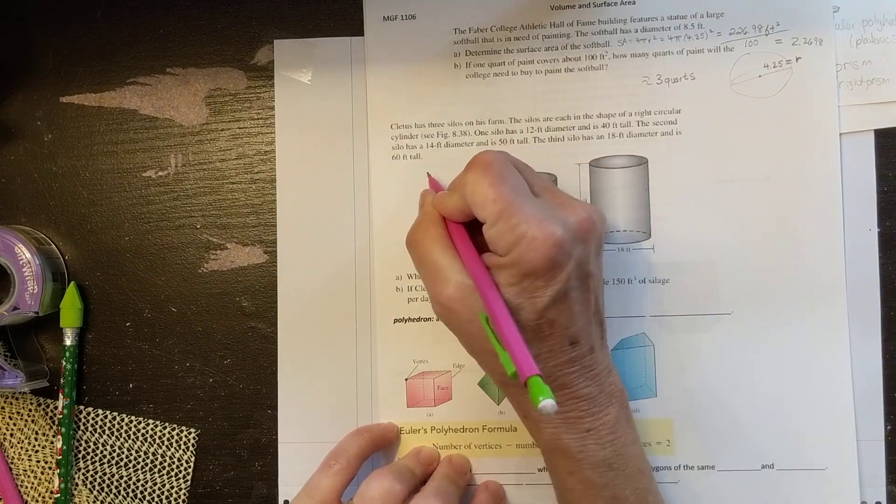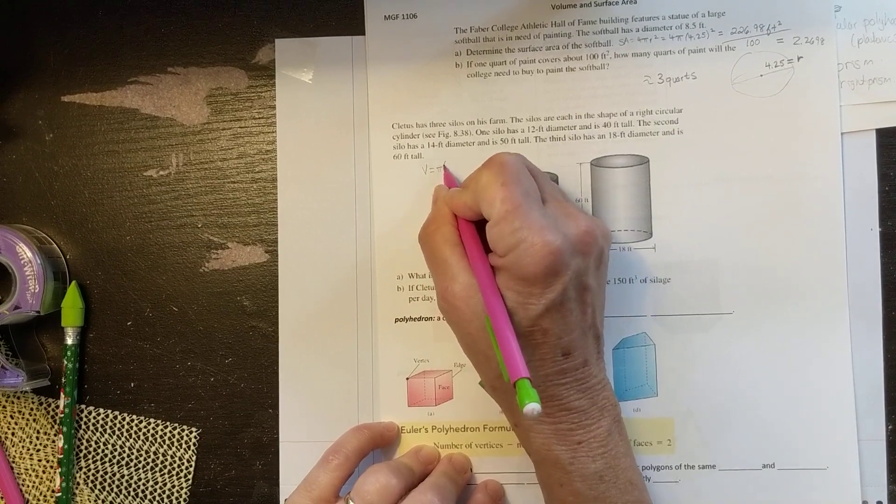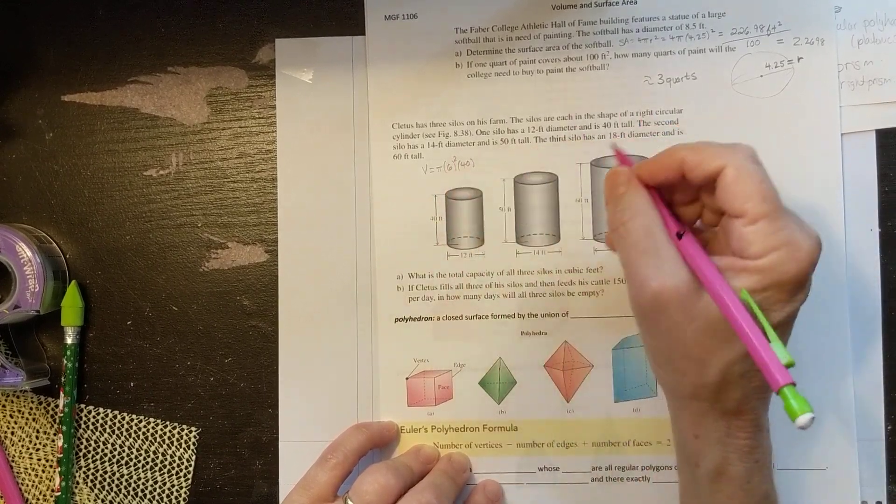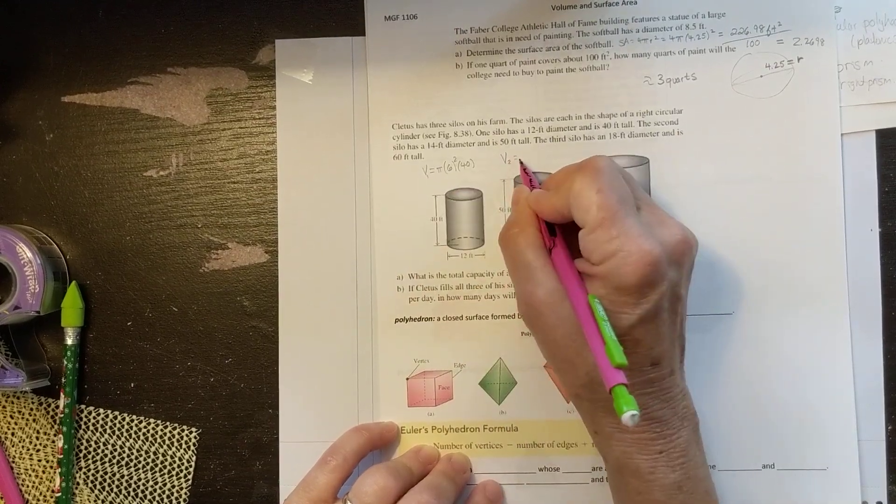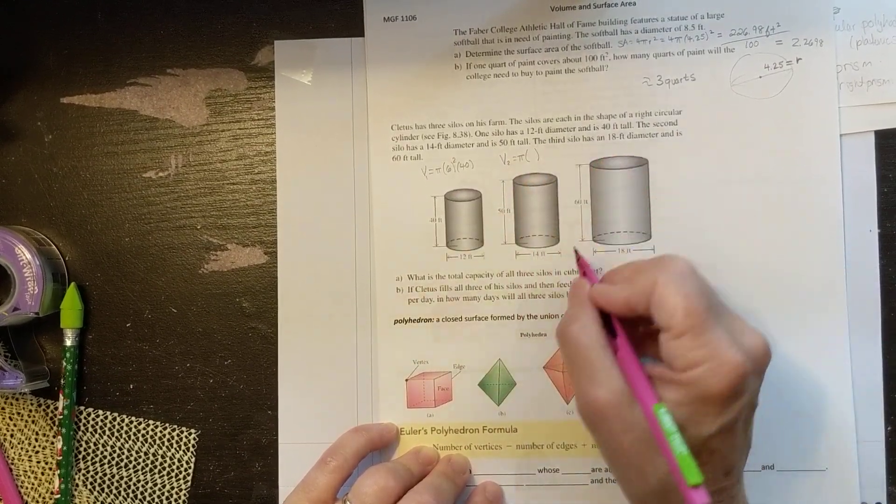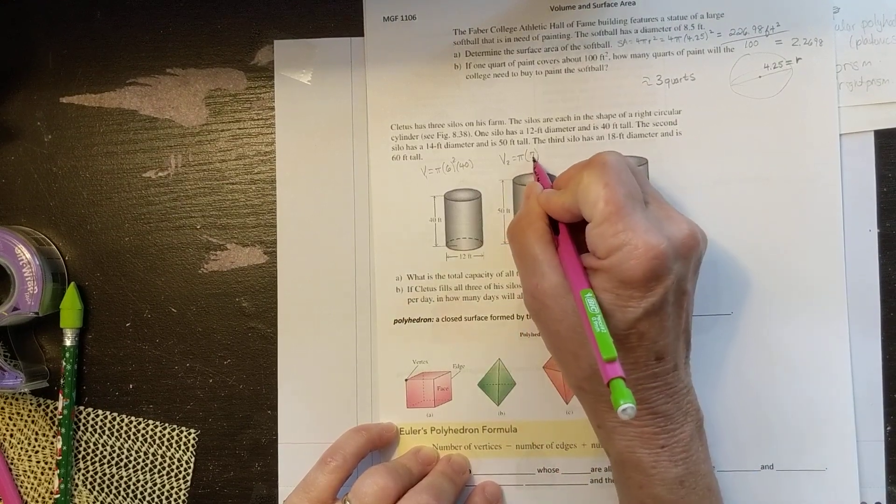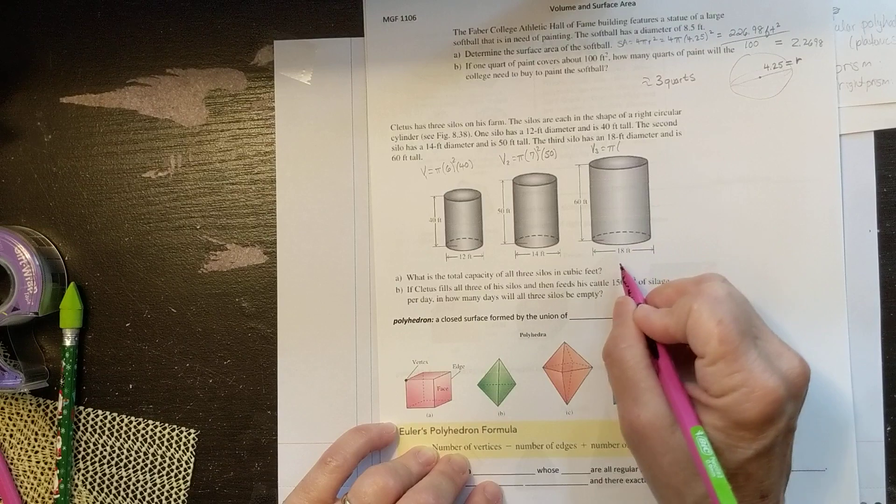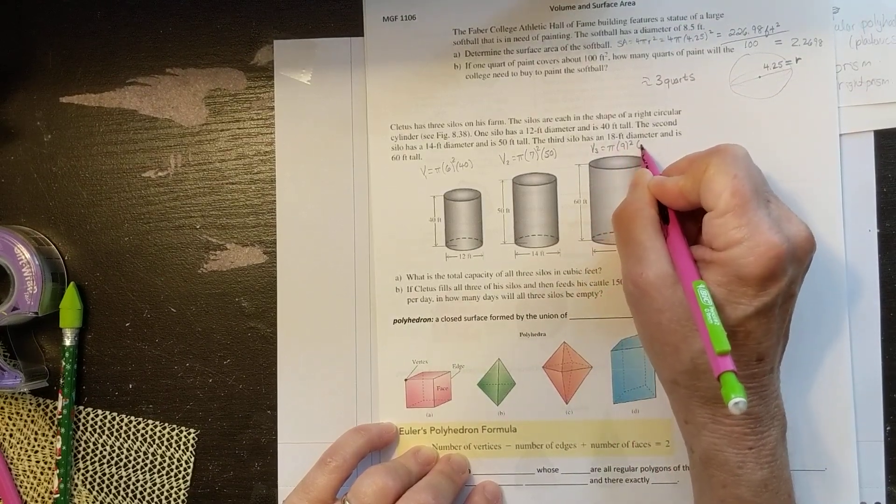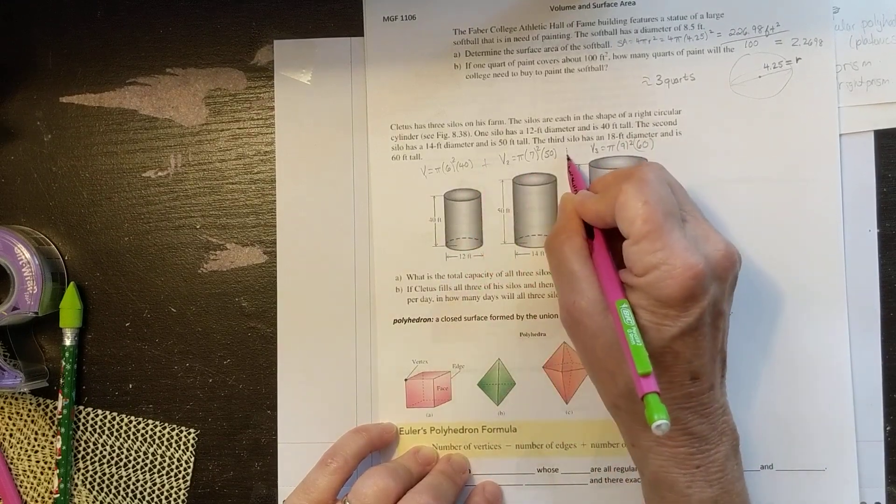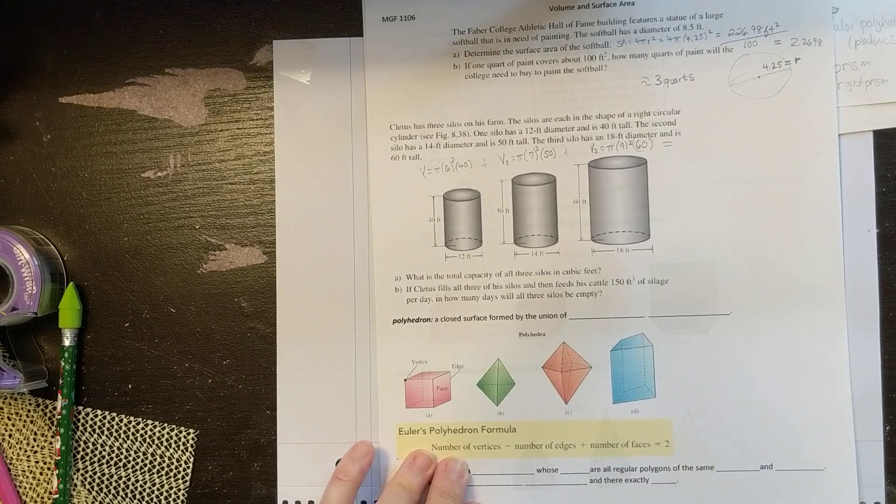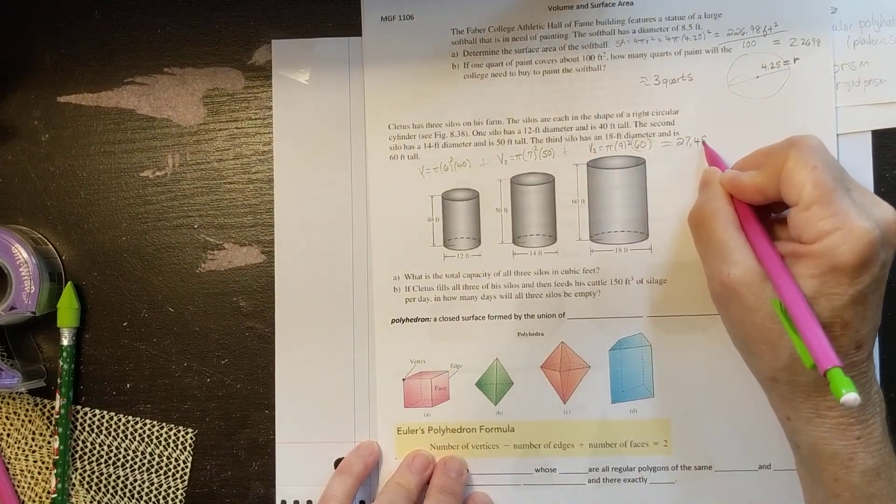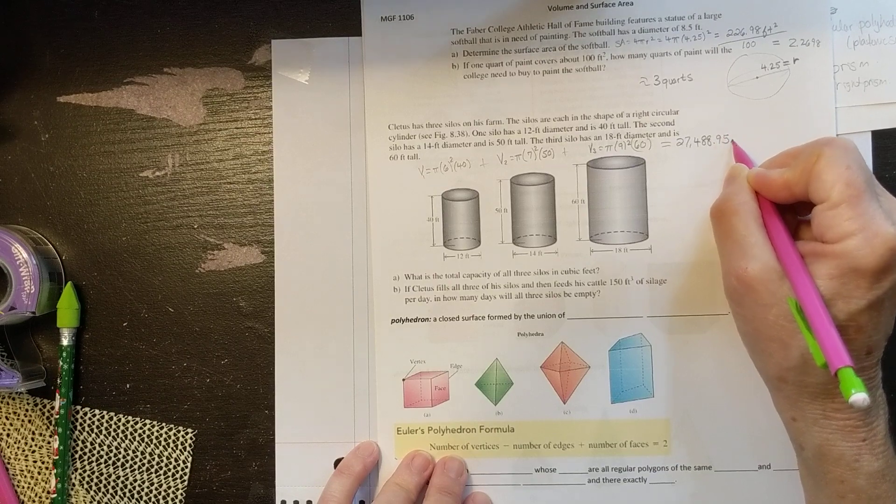So the volume of the first one is πr²h. The radius is going to be 6 feet times 40. And the volume of this one is πr², the radius is 7 times the height of 50. And the volume of the third is π times 9 squared times the height, which is 60. And if I add these up, turns out he has got a total volume of 27,488.95 cubic feet.